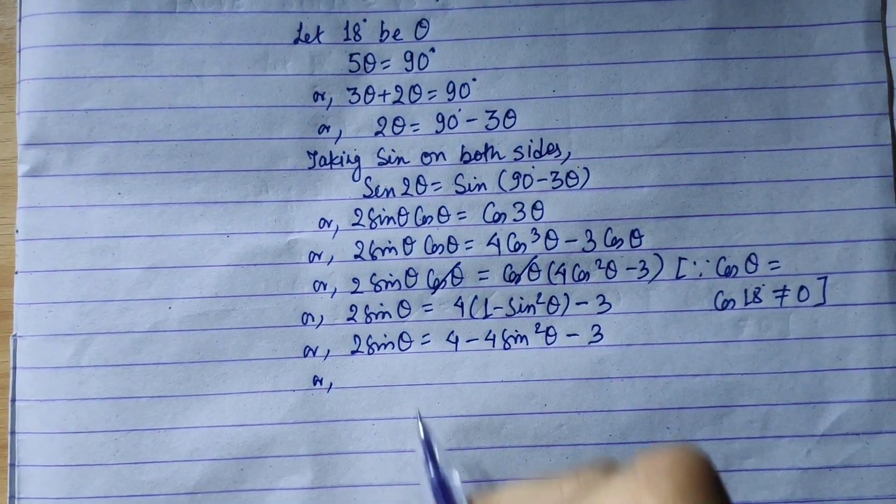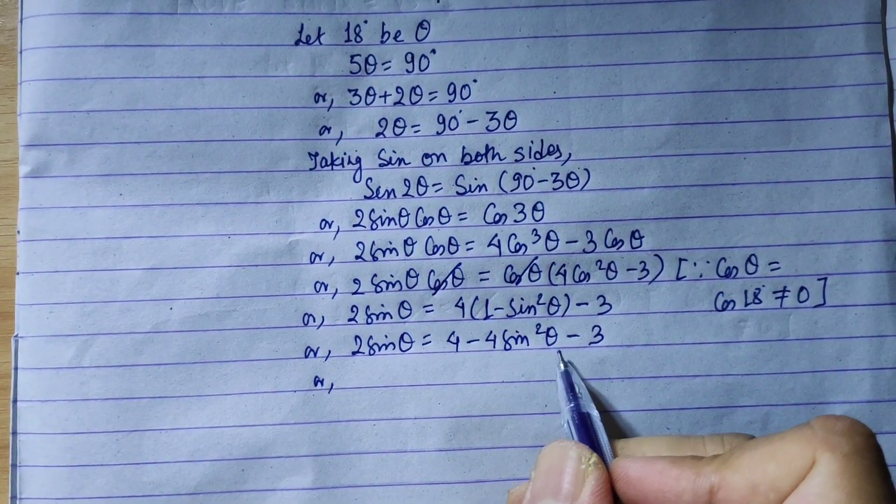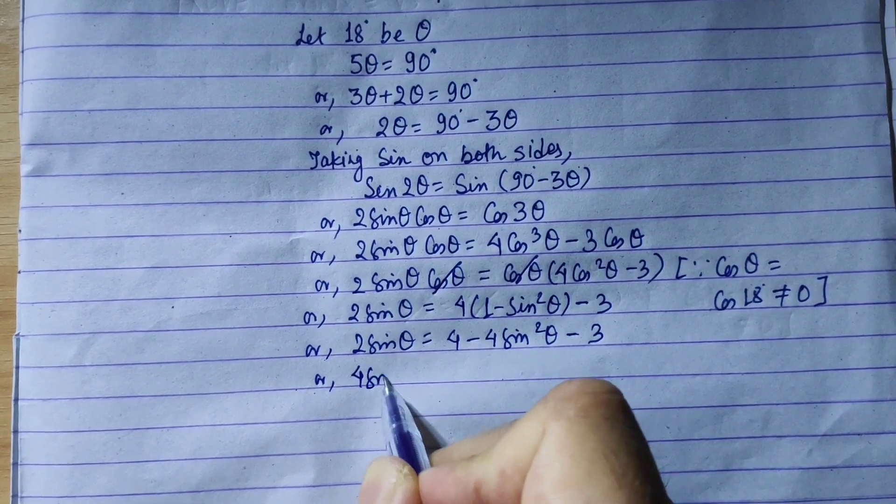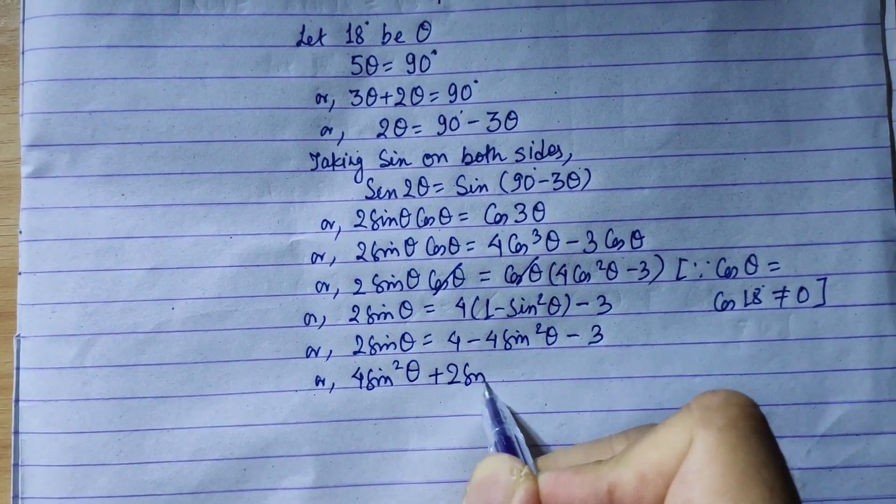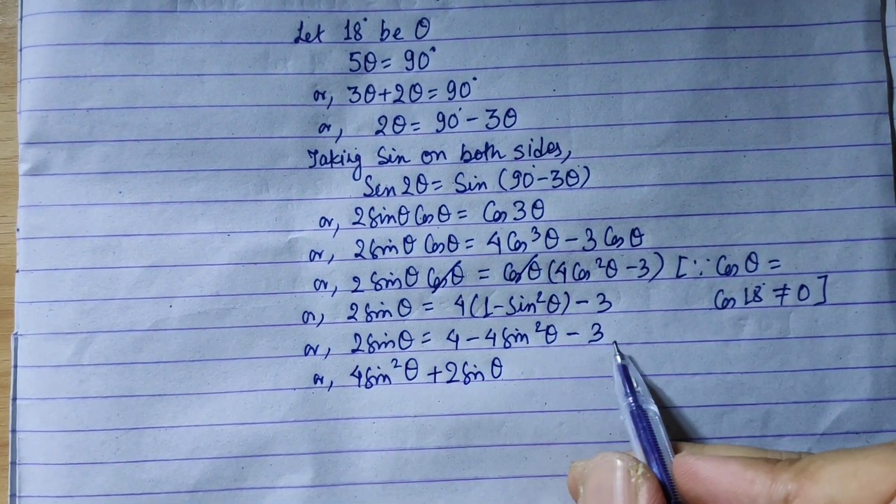Simplifying, we take 4 sin square theta to the left side. 4 sin square theta plus 2 sin theta.